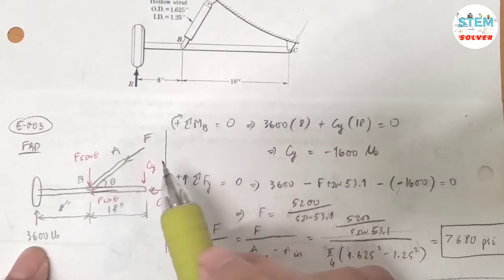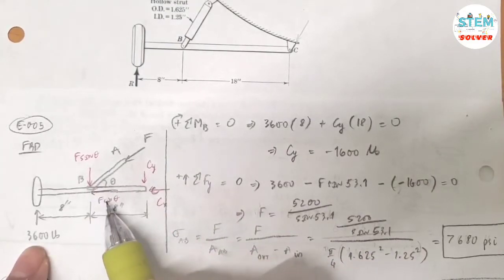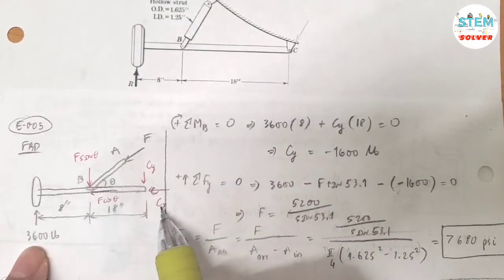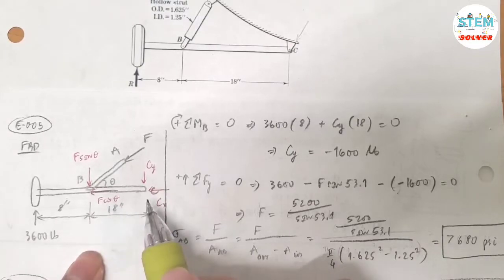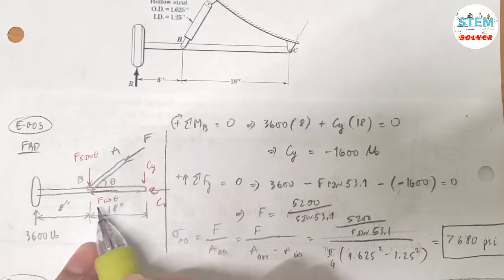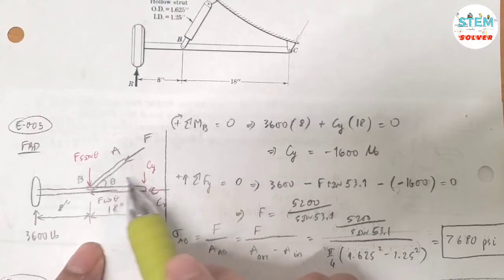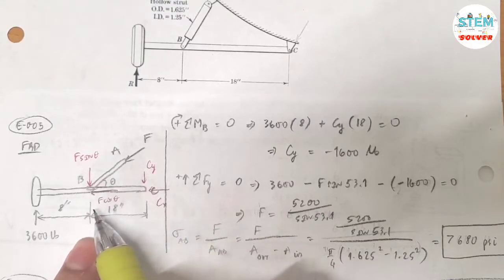Now, as you can see, we have one, two, three unknowns. So if we sum it in the X direction, we get two unknowns. If we sum all the unknown reactions in the Y direction, we have two unknowns. So I'm going to take the moment. So where should I take the moment?